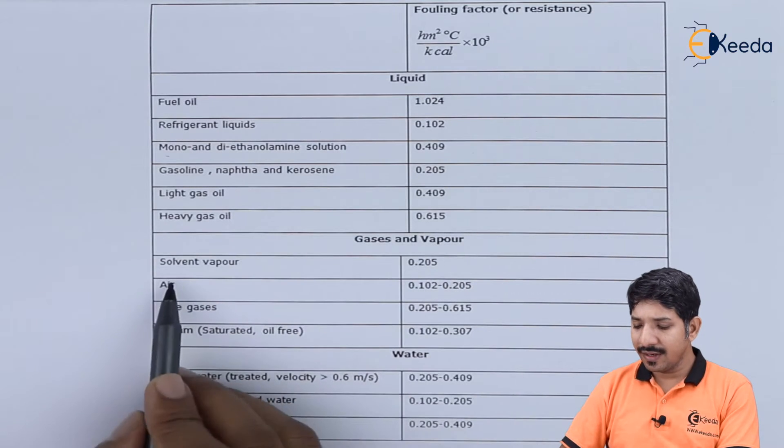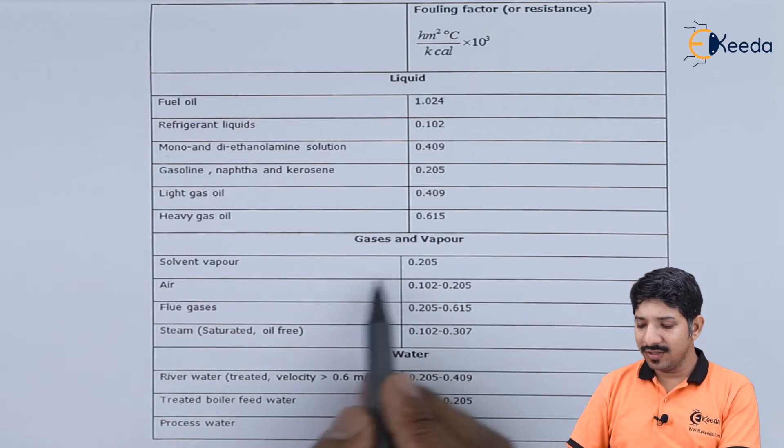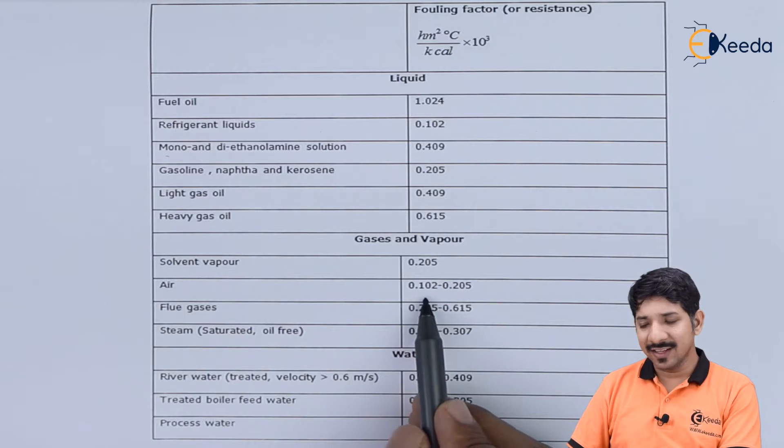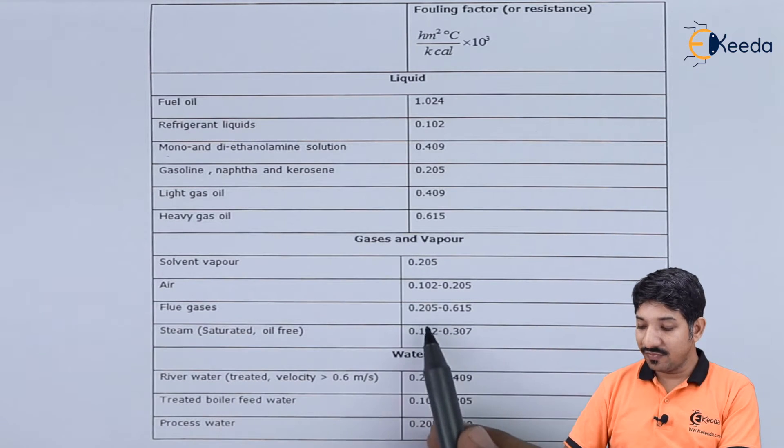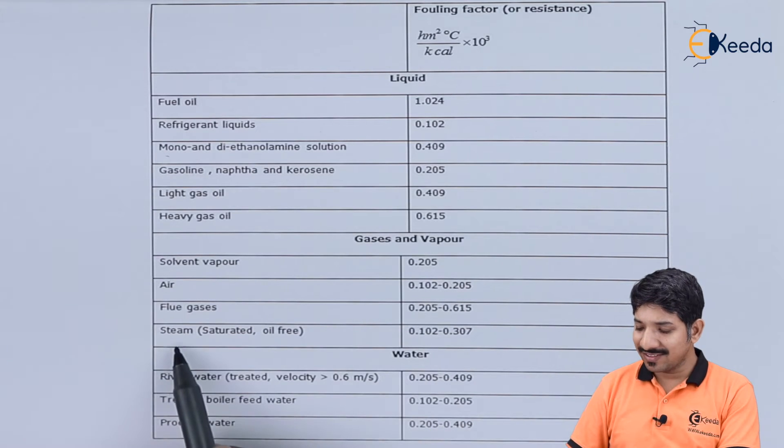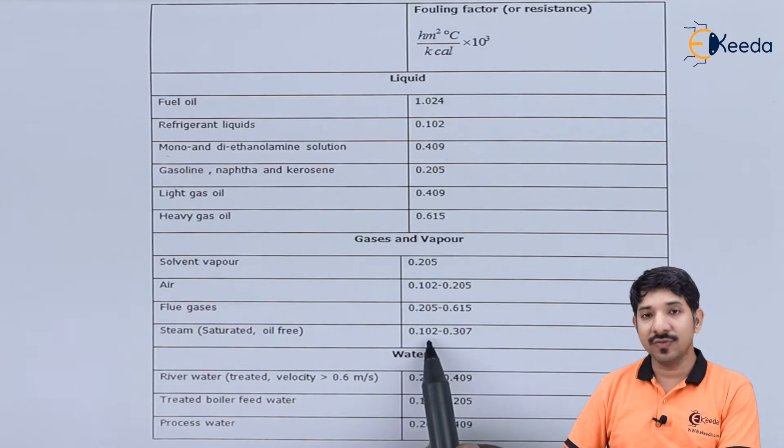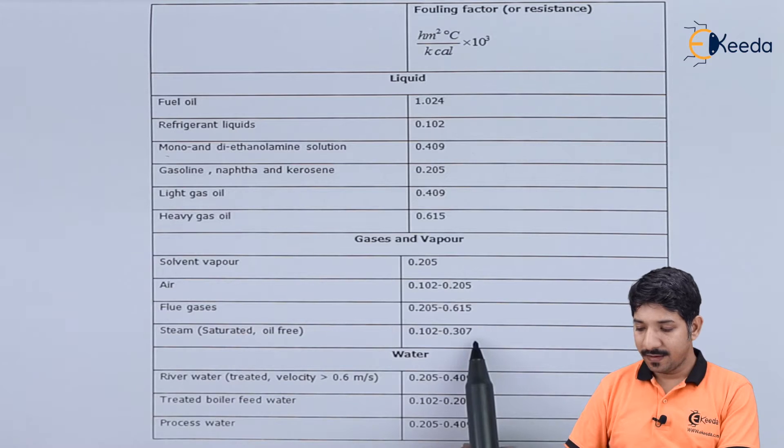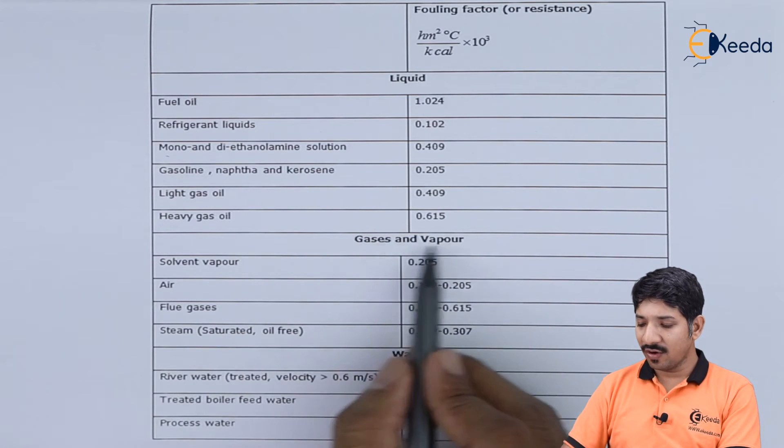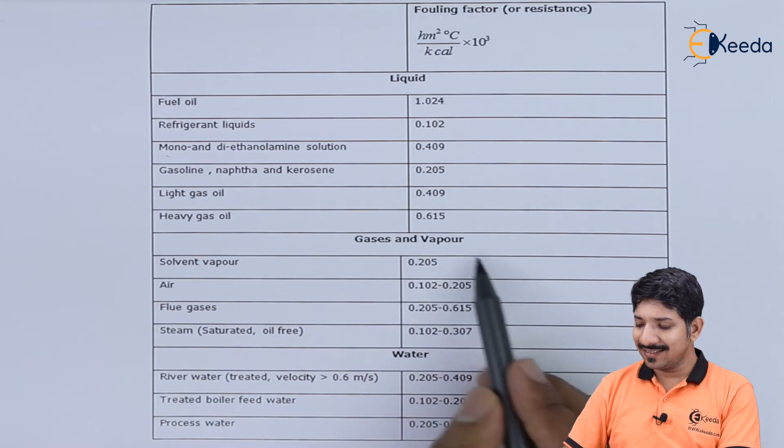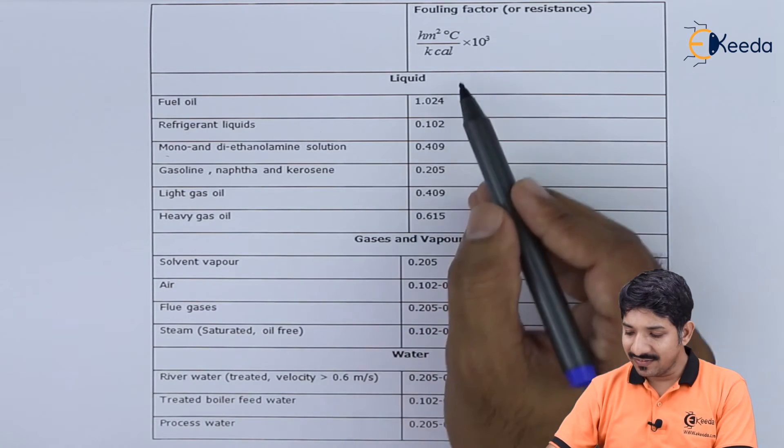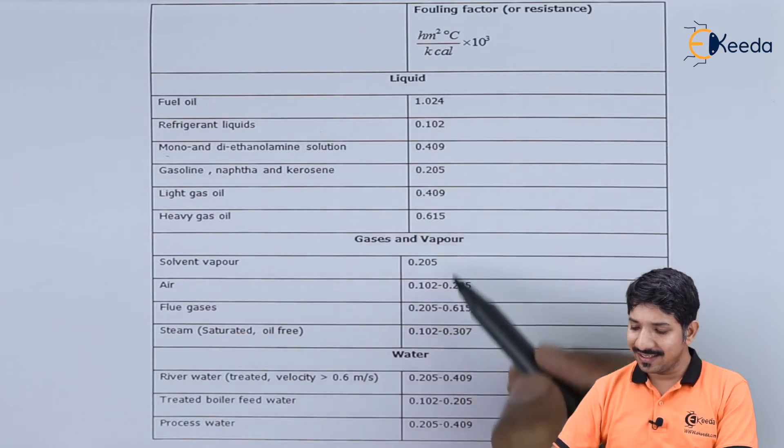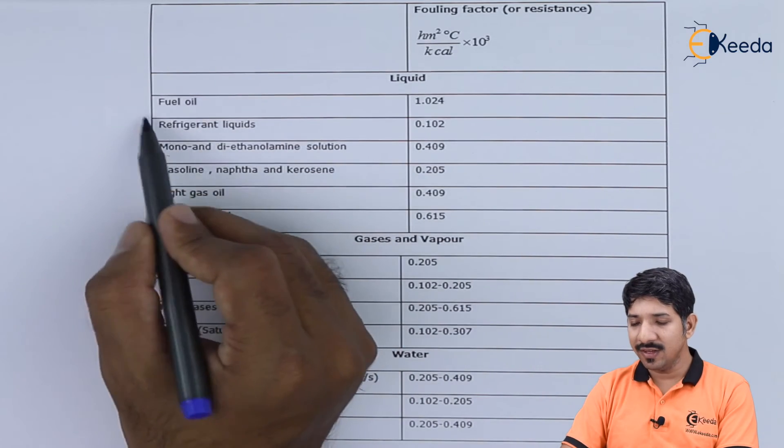Here we talked about liquids. Similarly, for gases and vapors: for solvent vapor it is around 0.2, for air it varies from 0.1 to 0.2, for flue gases from 0.2 to 0.6, and for steam from 0.1 to 0.3. For gases and vapor, the range is again between 0.1 to 0.6, almost the same as liquids except for fuel oil.